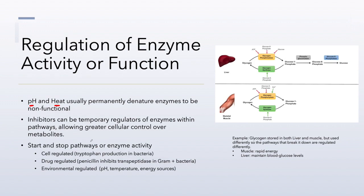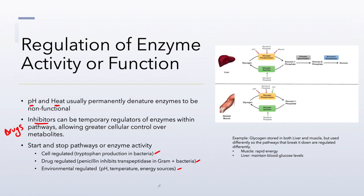Inhibitors are molecules that can be temporary regulators of enzymes, and this occurs within the actual metabolic pathways themselves. Enzymes involved in pathways often determine the final function of that pathway — inhibitors can start and stop pathways. If the cell regulates it, this is known as cell-regulated. We can also drug-regulate it with medications, or it can be environmentally regulated through changes in pH, temperature, and different energy sources such as ATP or GTP.